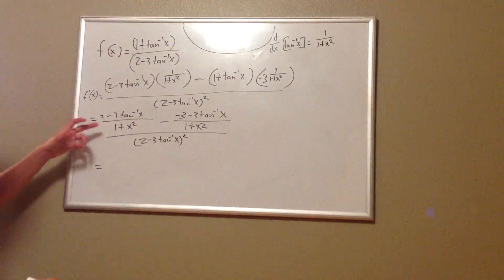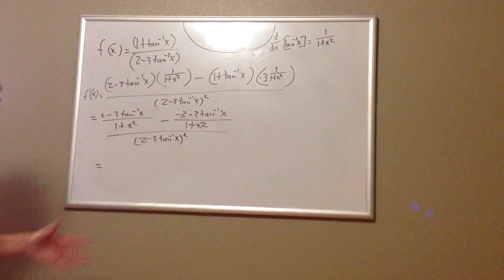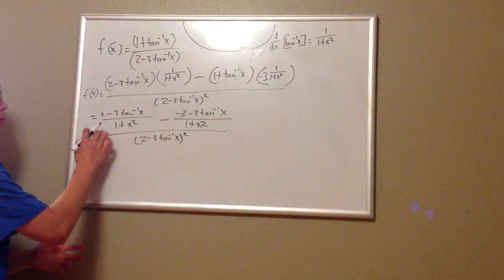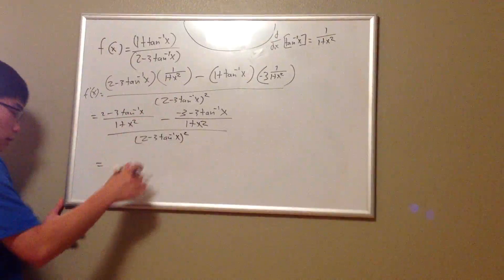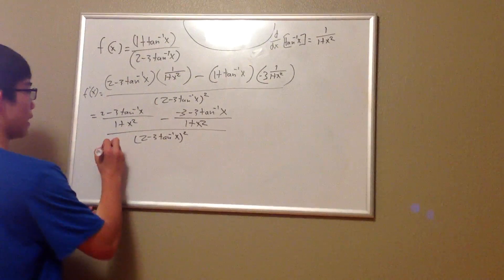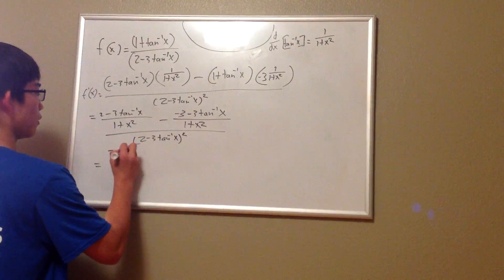From here, we realize that 1 plus x squared is the denominator for both of the terms in the numerator, so we can just pull that down into the denominator.